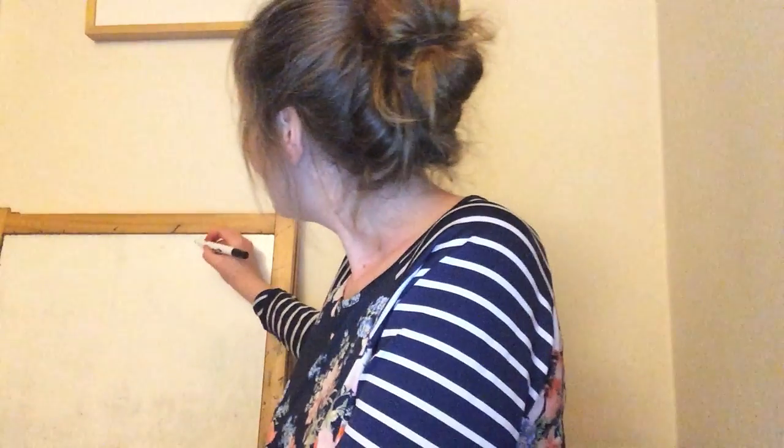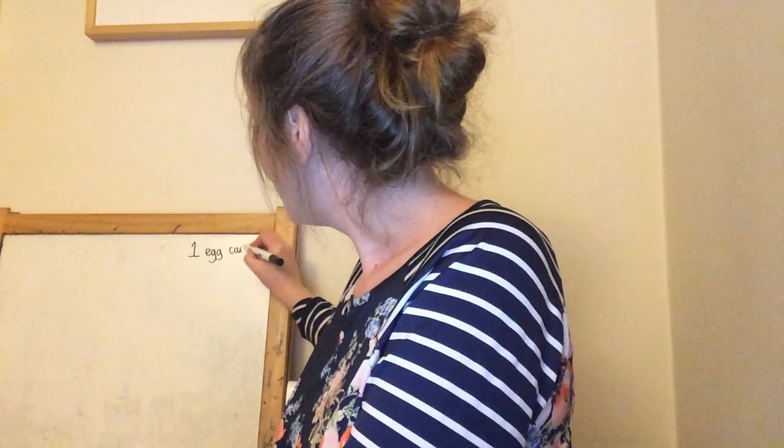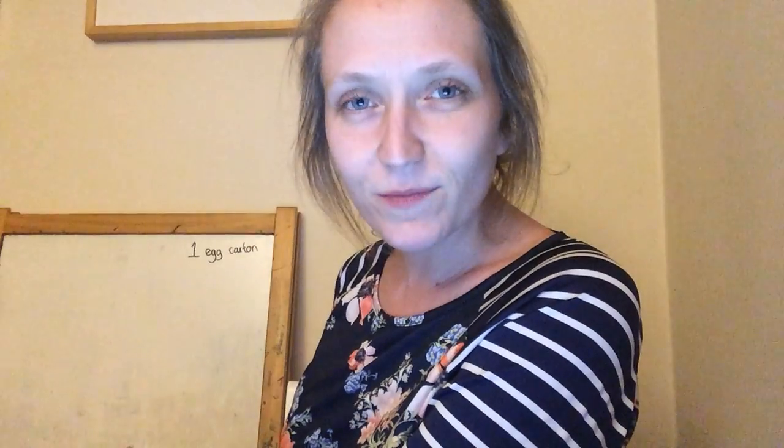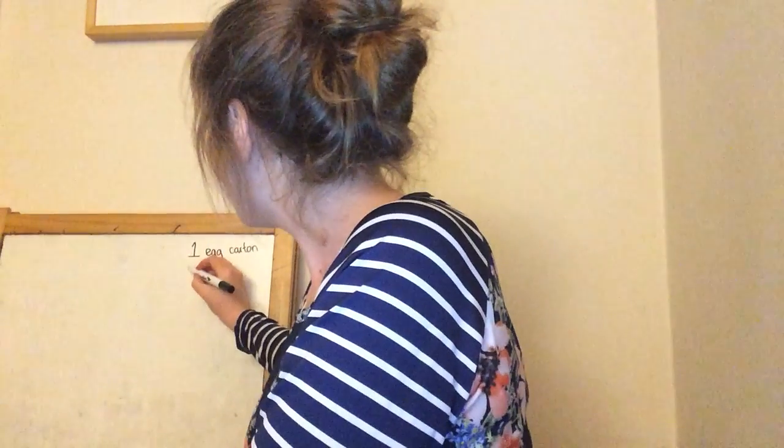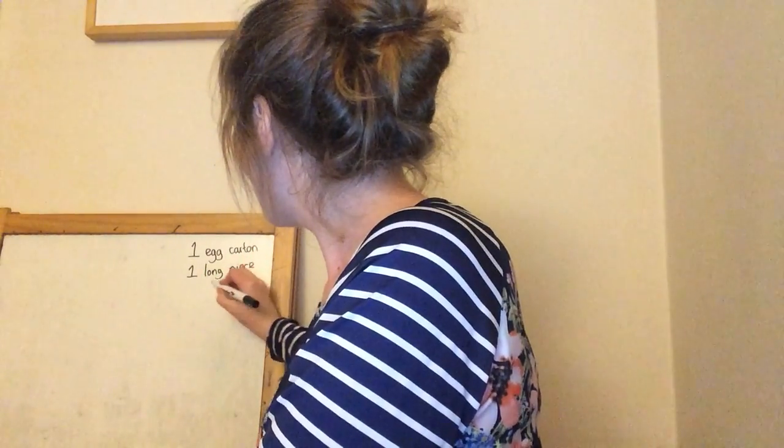Let me show you what I mean about writing down what you've used. I've used one egg carton, so I'm going to practice my numbers by writing it down. It's maths, so practice your numbers, but don't worry about the words if you don't want to. You could get your grown-up to do the wordy part — that's absolutely fine — or if you want to write both you can. So one egg carton. I had one long bit of string, so I'm going to write that down: one long piece of string.